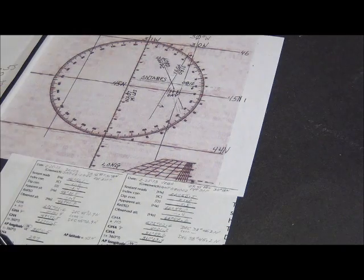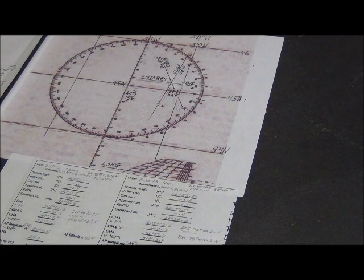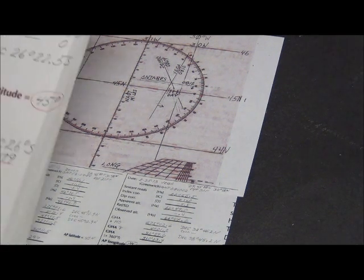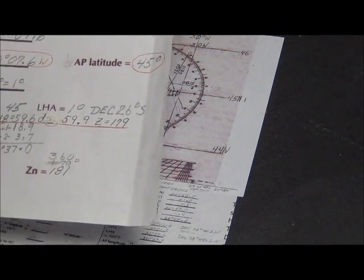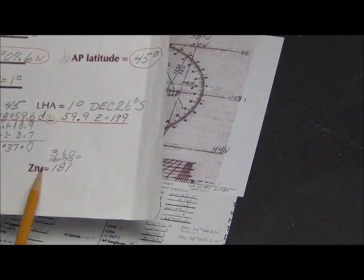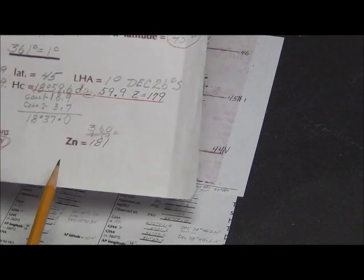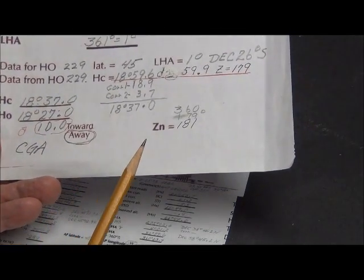So the next thing we want to do is to, let's start with the Antares. Antares, if you remember, was ten point zero away from 181. Ten point zero away from 181.